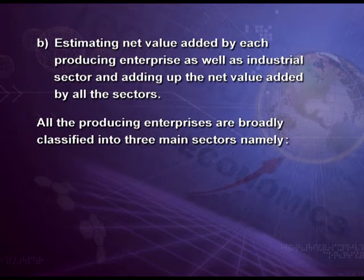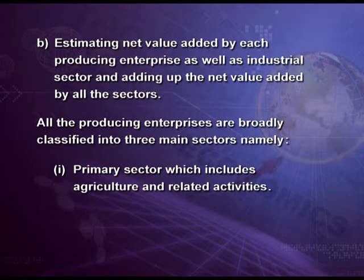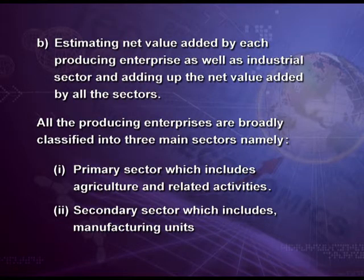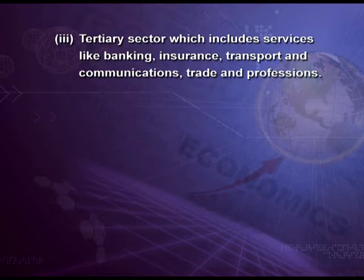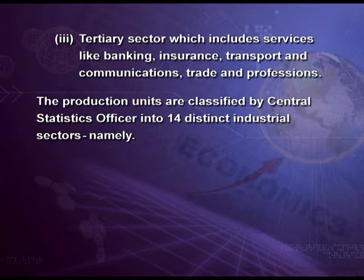All the producing enterprises are broadly classified into three main sectors: the primary sector, which includes agriculture and related activities; the secondary sector, which includes manufacturing units; and the tertiary sector, which includes services like banking, insurance, transport, communication, trade, and professions. The production units are classified by the Central Statistics Officer (CSO) into 14 distinct industrial sectors.